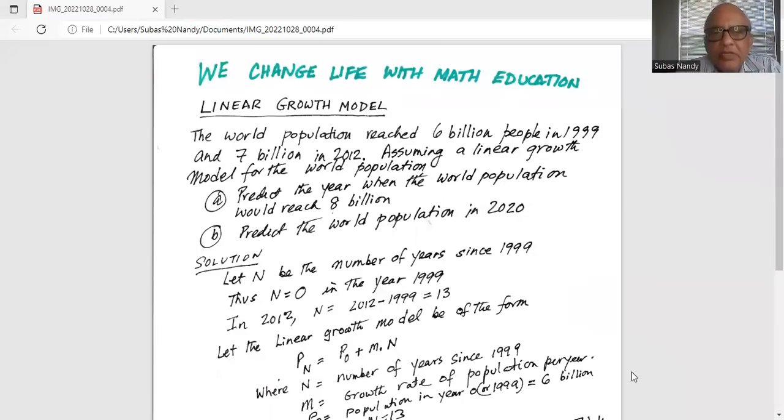The world population reached 6 billion people in 1999 and 7 billion in 2012. Assuming a linear growth model for the world population, predict the year when the world population would reach 8 billion. Part A. Part B: Predict the world population in 2020.